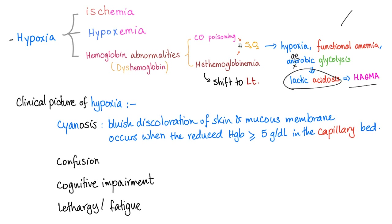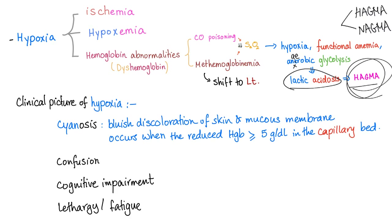Lactic acidosis will lead to metabolic acidosis. We have two types of metabolic acidosis: high anion gap metabolic acidosis and normal anion gap metabolic acidosis. Which type is seen in lactic acidosis? The answer is HAGMA.